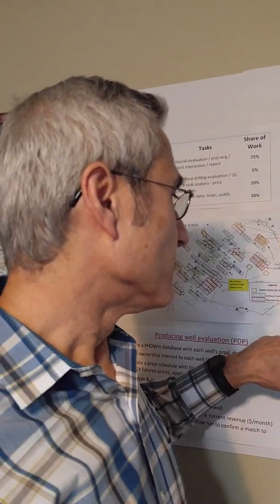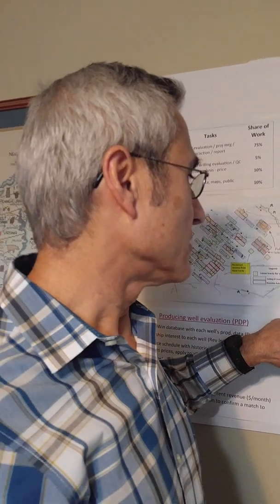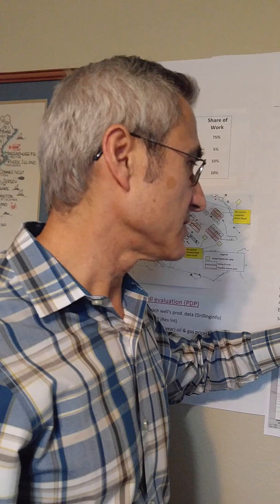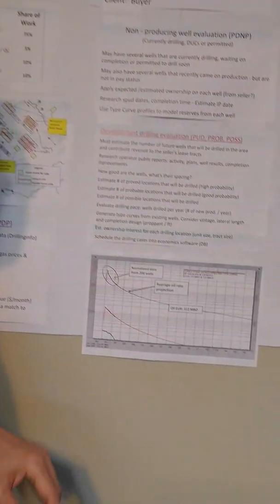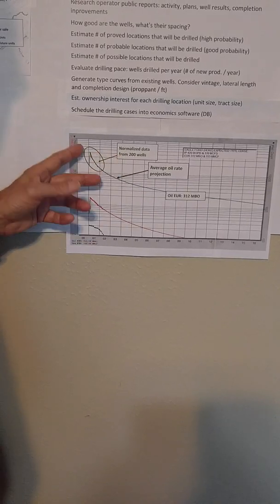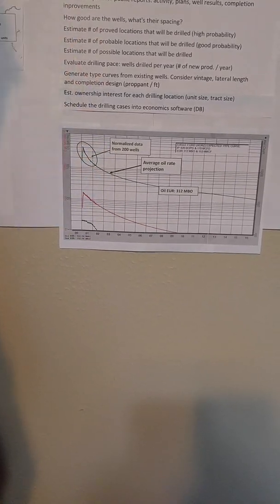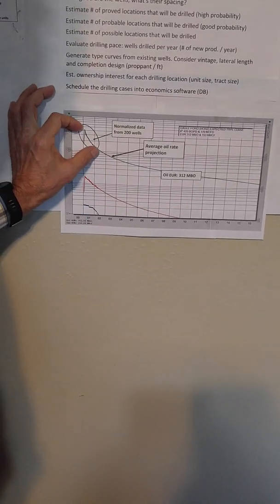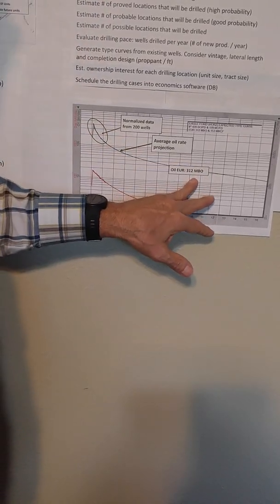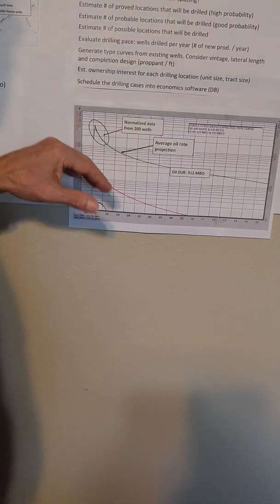For each well that we want to drill, we have to come up with a type curve. We consider the vintage of the existing wells, their lateral length, completion design, and make a normalized curve. Like this curve is a 200 EUR well in this area, so the historical data is here, and then we fit a curve through it—EUR of 300—so that's what we're going to apply to all these drilling locations.